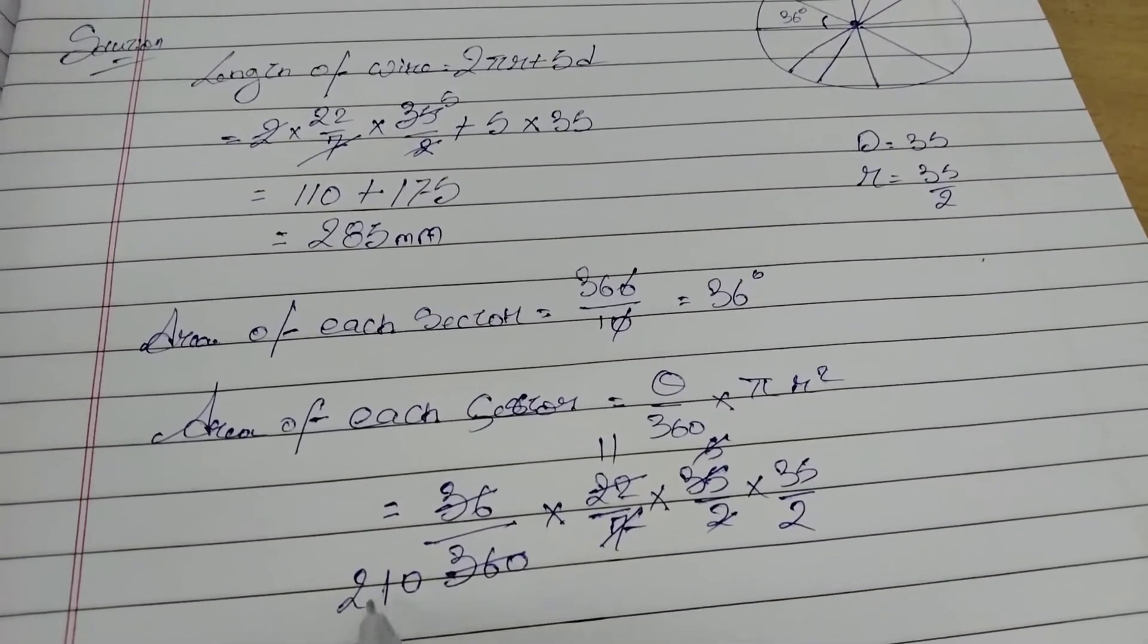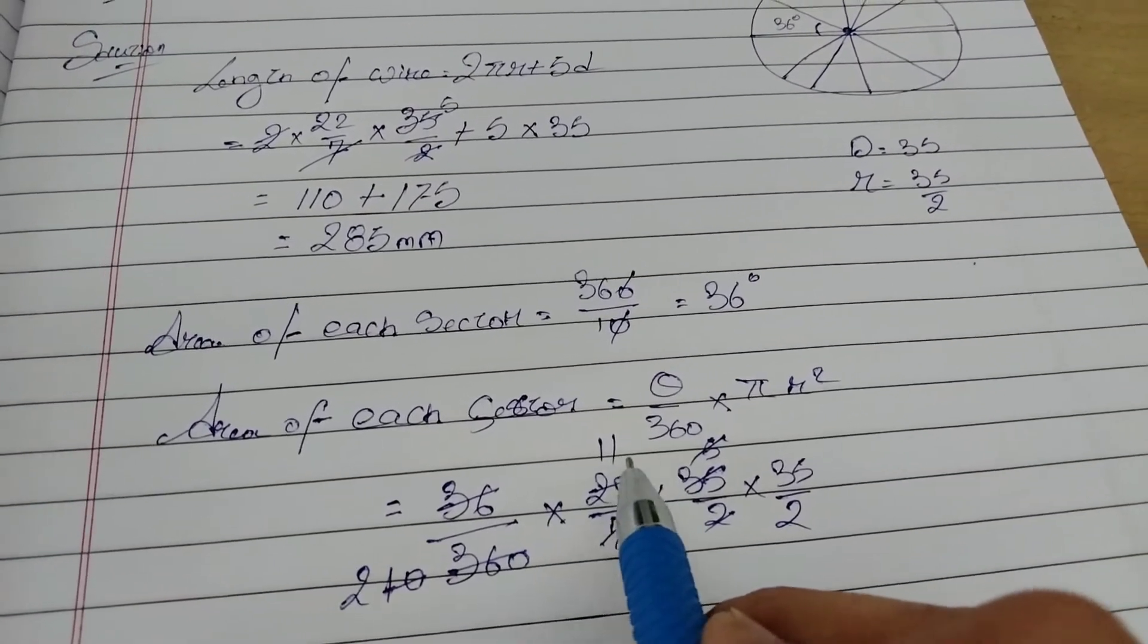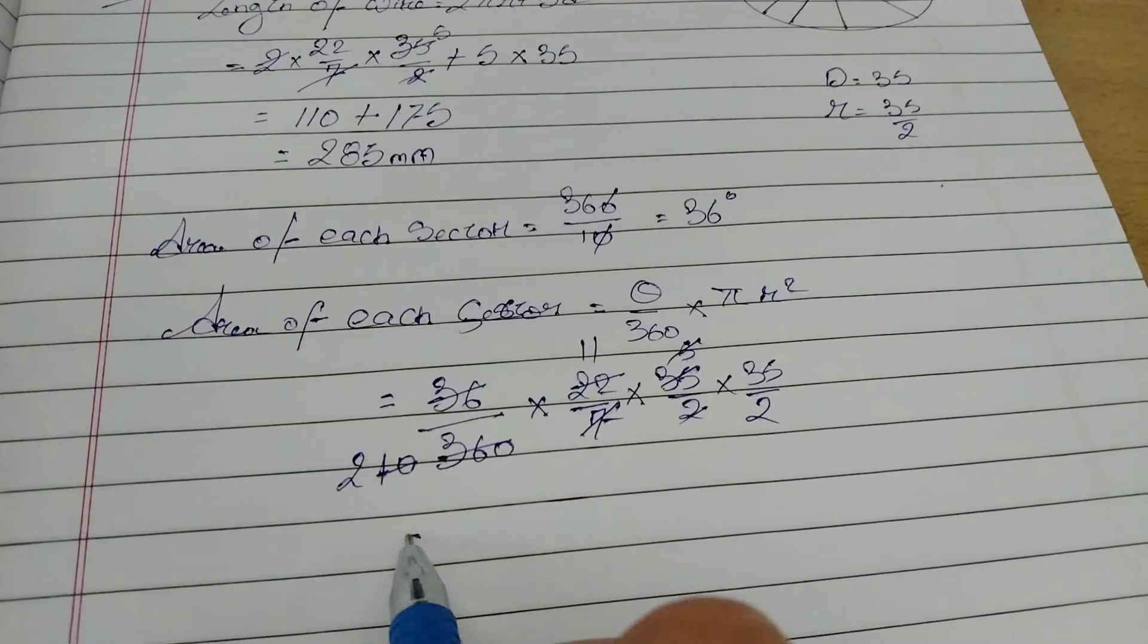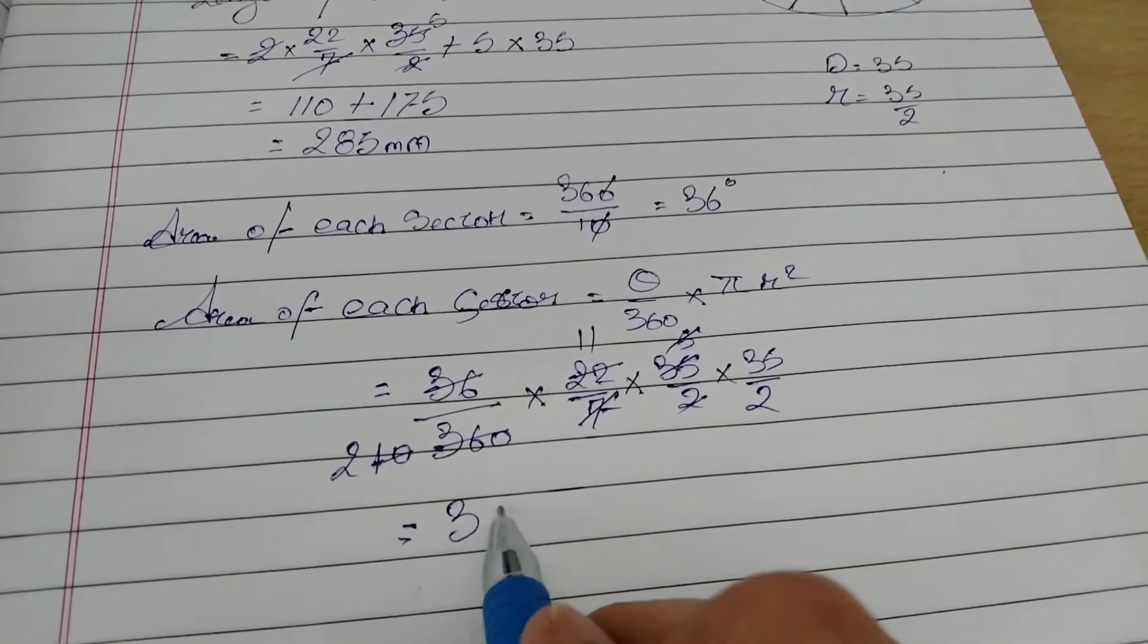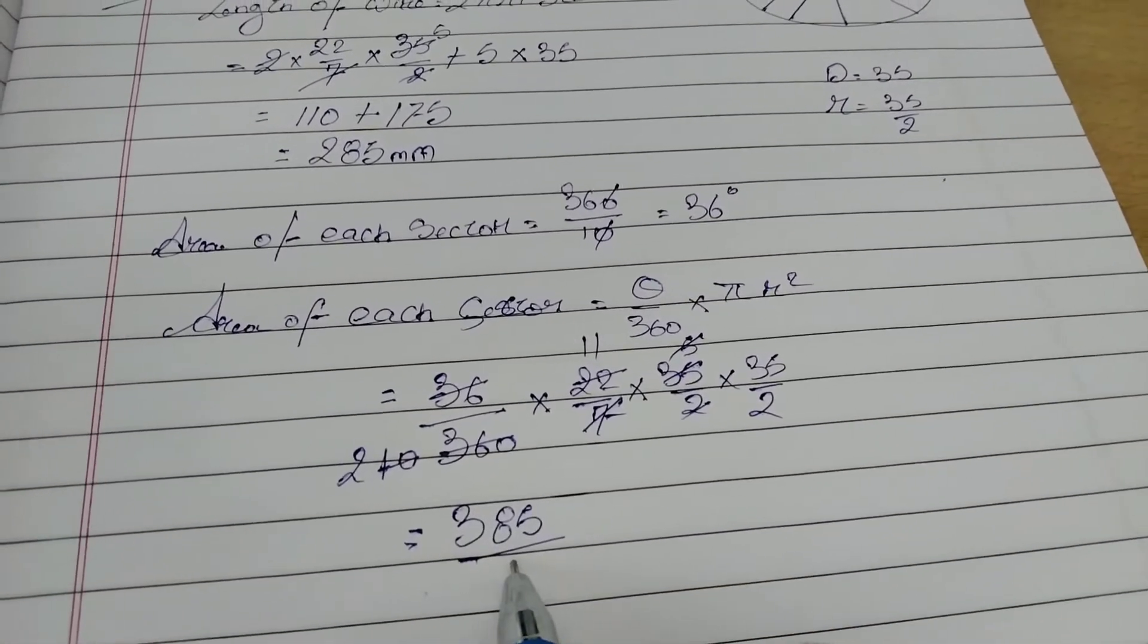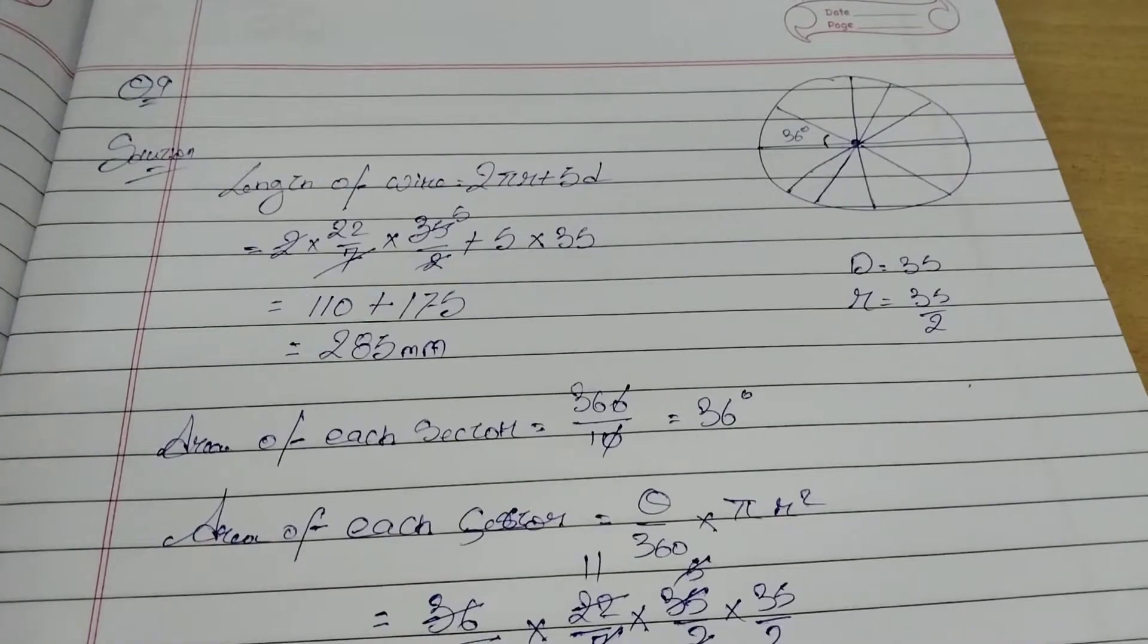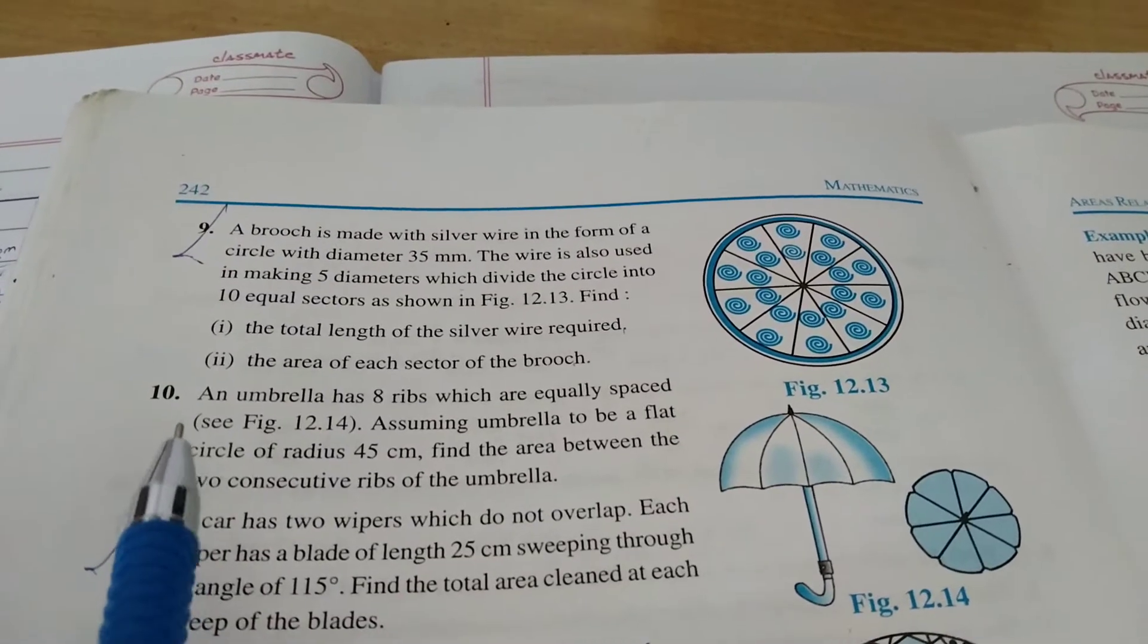Five into 10, the only numbers which are left now are 11 and 35, 2 and 2. So let's write down: 11 into 35, we get 385. Two into 2 is 8, so 4. So this is your answer. With this we are done question number 9, section 12.2. Thank you.